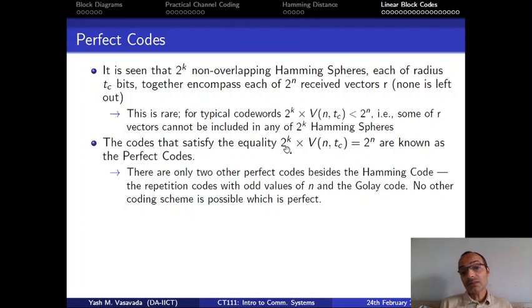The codes that have this, that meet this equality, 2 to the power k times V(n,tc) equals 2 to the power n, they form kind of an ideal crystalline structure. All the Hamming spheres are perfect. They are kind of arranged in the nicest possible manner. They are non-overlapping. They are as big as they can without being non-overlapping. And together they cover all of the 2 to the power n sequences. And so the Hamming code is one of very few perfect codes that are possible. And in fact, there are only two other perfect codes besides the Hamming code.